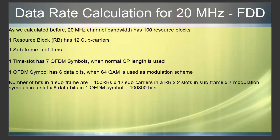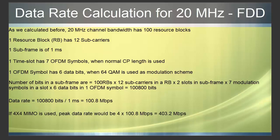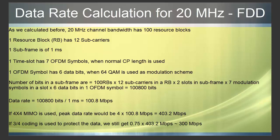Now we can calculate data rate, which comes out to be 100 Mbps. If 4×4 MIMO is used, peak data rate would be 4 × 100 Mbps = 400 Mbps. And if 3/4 coding is used to protect the data, we get 0.75 × 400 Mbps, which is roughly 300 Mbps as peak data rate. Note that this is just a theoretical data rate and we have assumed all conditions are favorable, such as 64QAM being used with no loss on the air interface, so actual field throughput may differ.